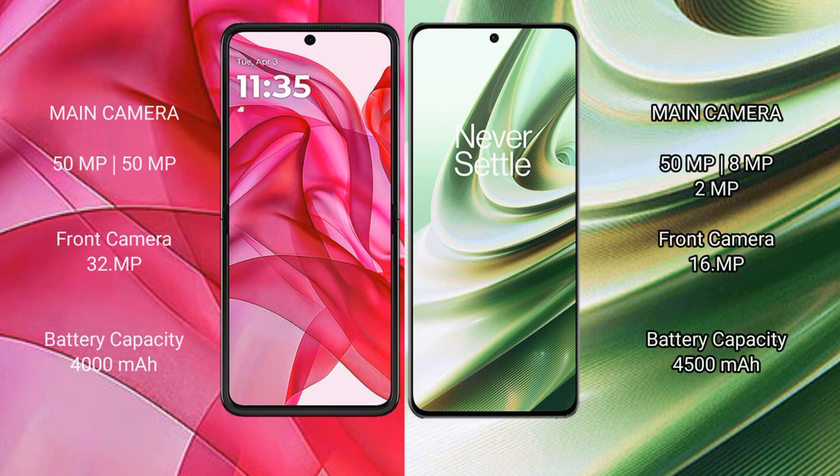Motorola Razr 50 Ultra features a dual rear camera setup: 50MP and 50MP, with a 32MP front camera. OnePlus 10R features a triple rear camera setup: 50MP, 8MP, and 2MP, with a 16MP front camera.